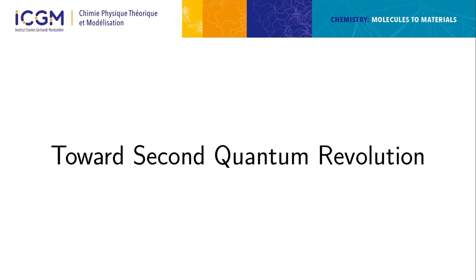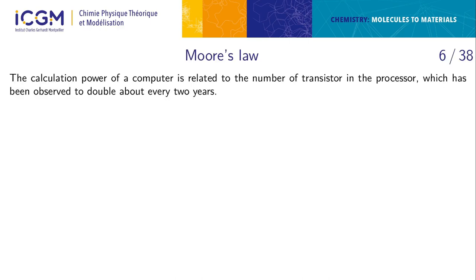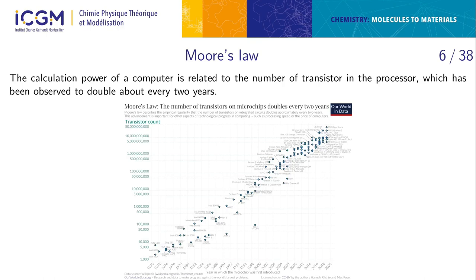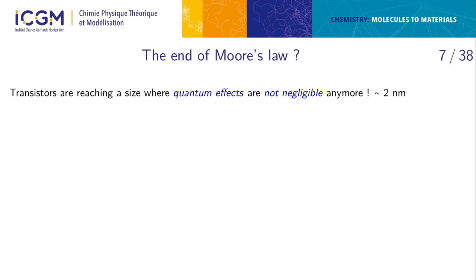Now we move to the second quantum revolution — the quantum computing field — where we build and manipulate information using the laws of quantum mechanics. We do this because Moore's law is coming to an end. The number of transistors in a processor doubles every two years, which has been true from the 1970s until now on a logarithmic scale, always linearly increasing.